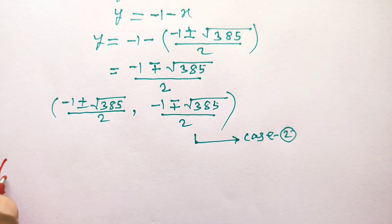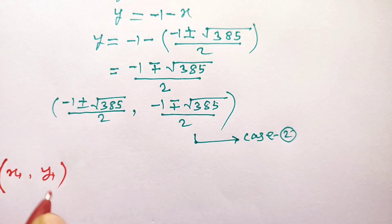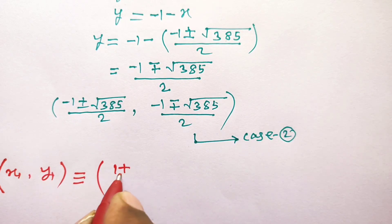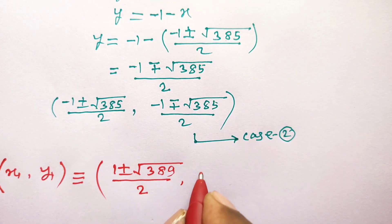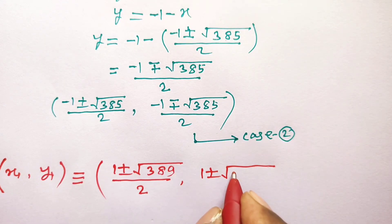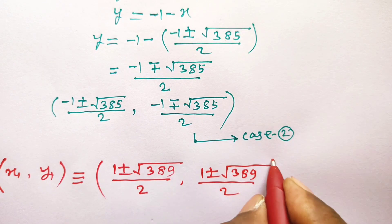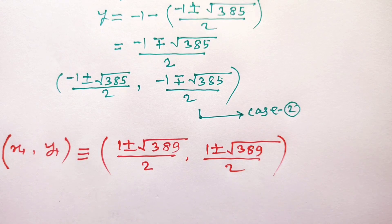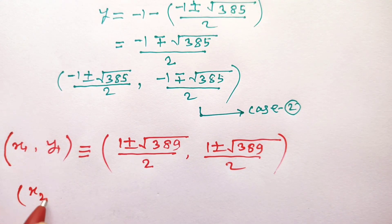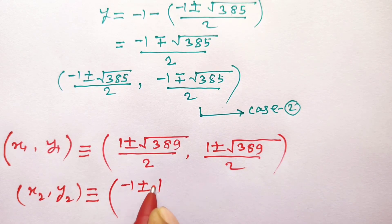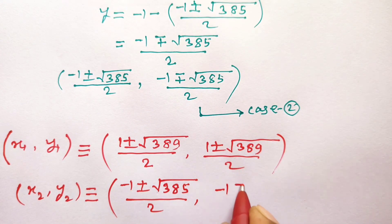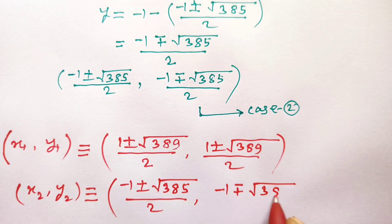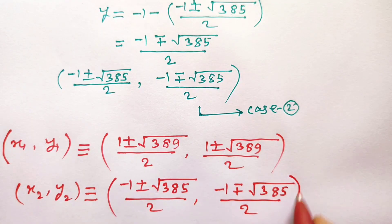Hence, the final answer: the first pair (x1, y1) is ((1 plus or minus square root of 389) divided by 2, (1 plus or minus square root of 389) divided by 2). The second pair (x2, y2) is ((minus 1 plus or minus square root of 385) divided by 2, (minus 1 minus or plus square root of 385) divided by 2). This is the answer.